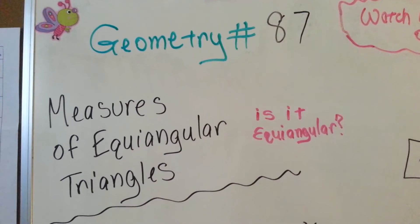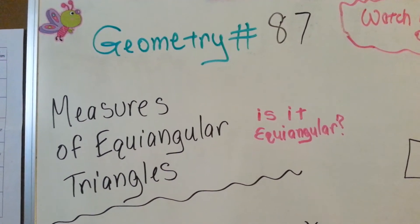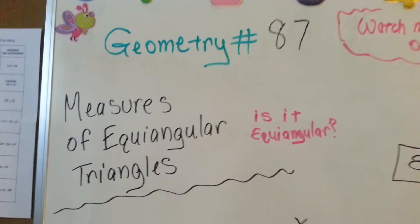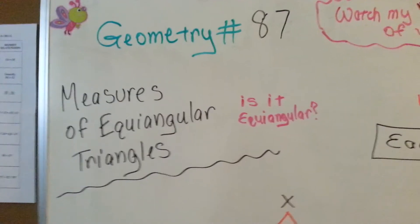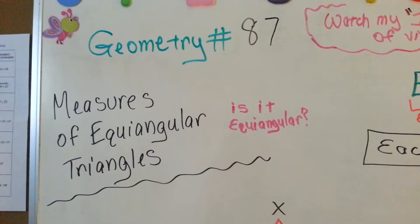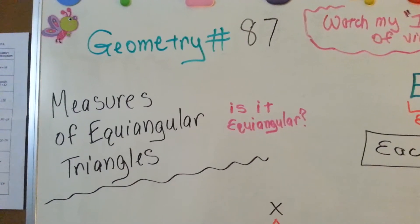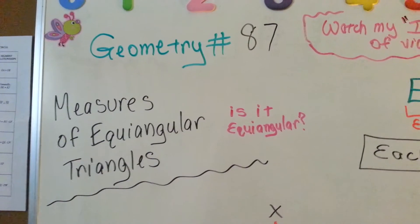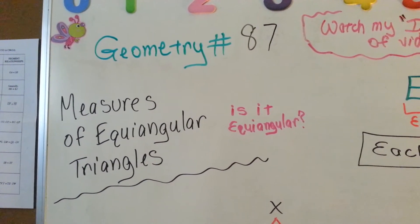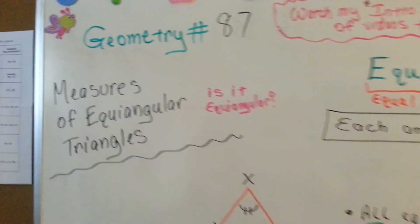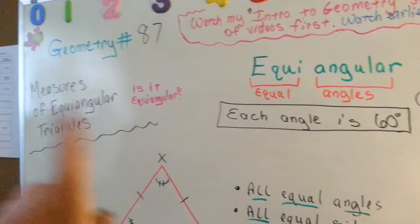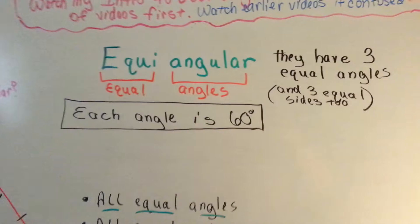The measures of equiangular triangles. Is it equiangular? You saw in the last couple of videos that there's an actual test to see if you're acute — a squared plus b squared is greater than c squared — and for obtuse, it was a squared plus b squared is less than c squared. So now we're going to discuss this one, and there is no test like that for it.